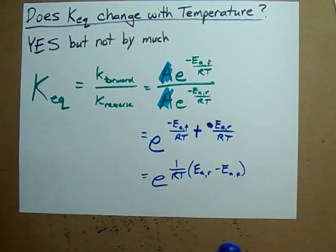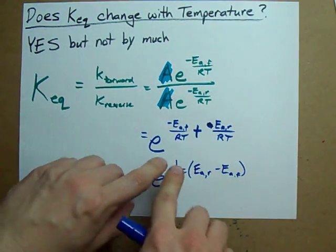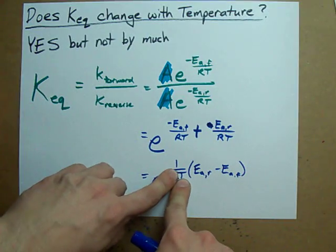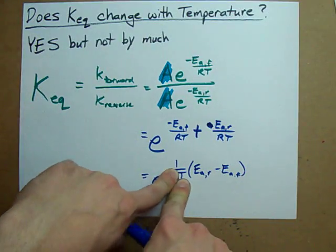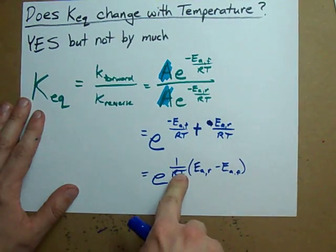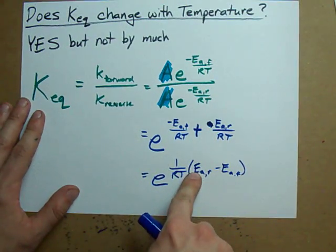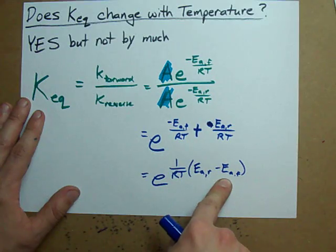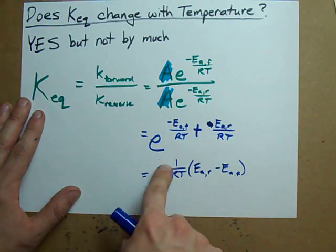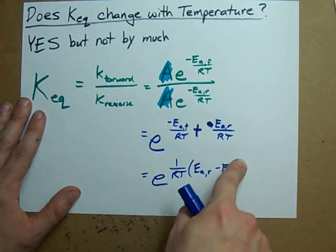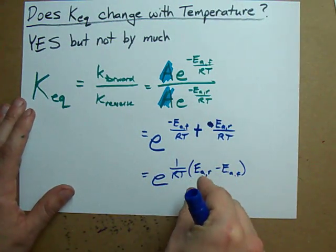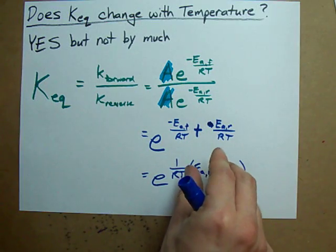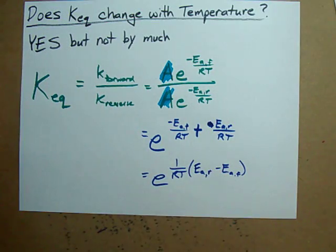All right, look. Keq clearly depends on T. As T gets bigger and bigger, this exponent gets smaller and smaller — that is, closer and closer to zero.